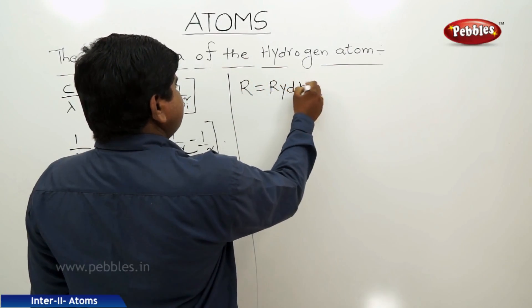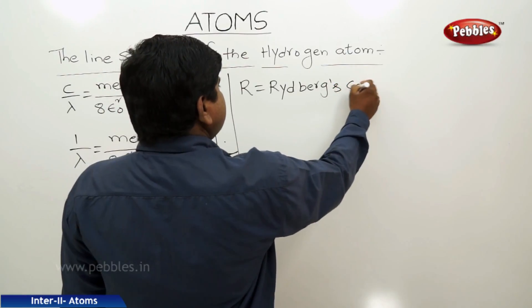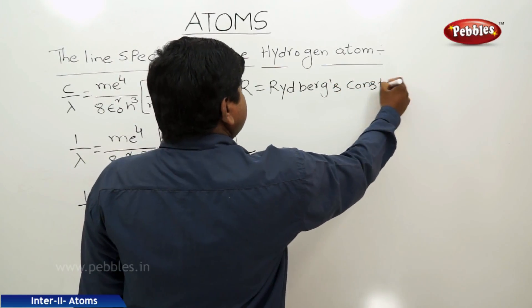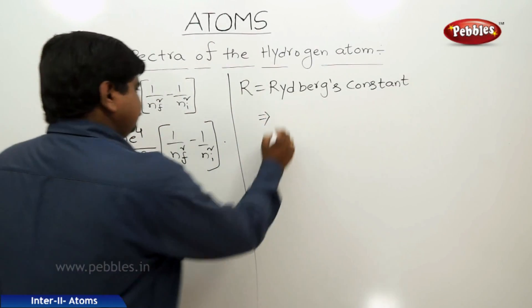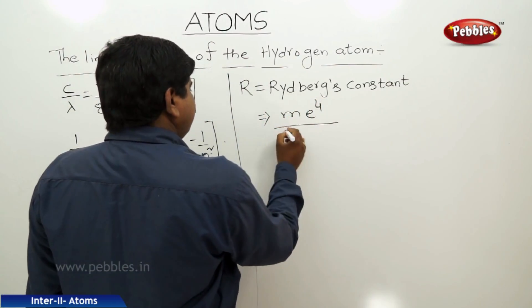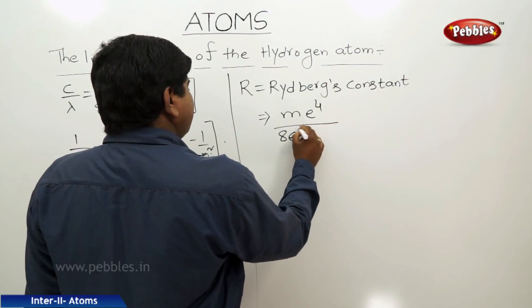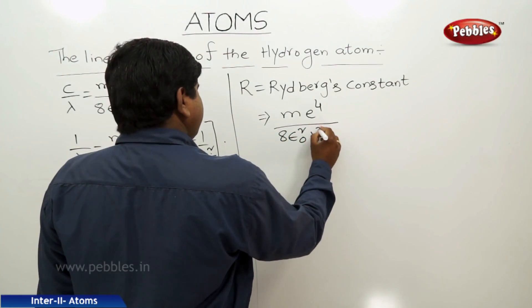we can write R, the Rydberg constant, equals m e⁴ by 8 epsilon naught squared h cubed c.